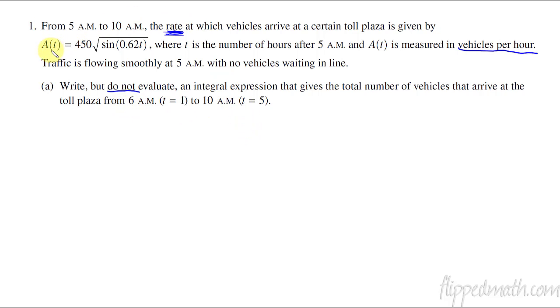We're going to write, but not evaluate, an integral expression that gives the total number of vehicles that arrive at the toll plaza from 6 to 10. We can probably assume the rate is always positive. The way we do that is we just go for the integral from 1 to 5, so that's 6 a.m. to 5 a.m., and then we can just say A(t) with respect to t, and that is the answer. You could look at lesson 8.3 for the calculus lessons on accumulation functions and how to deal with those in context.